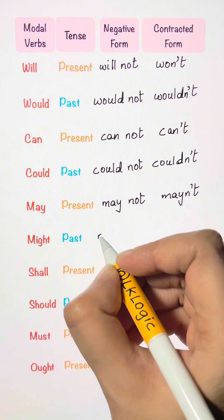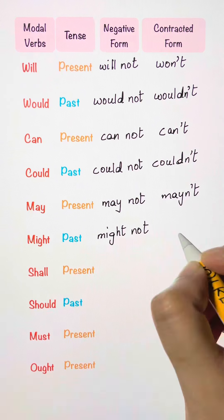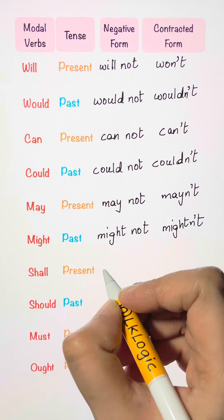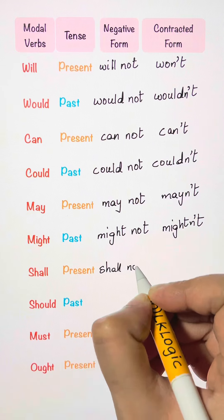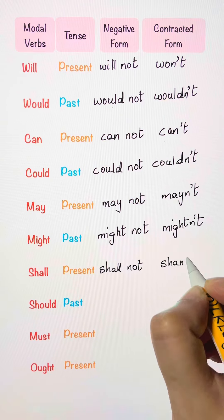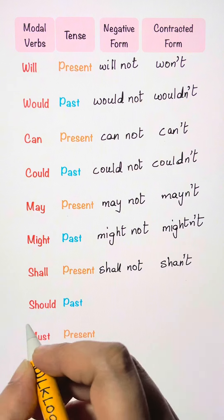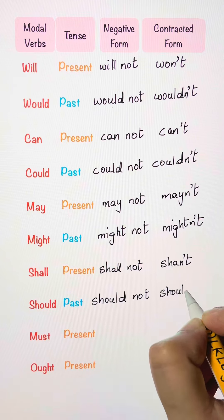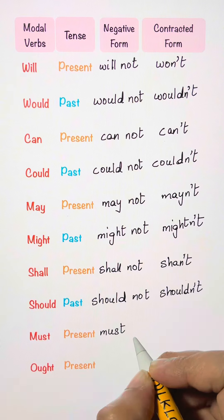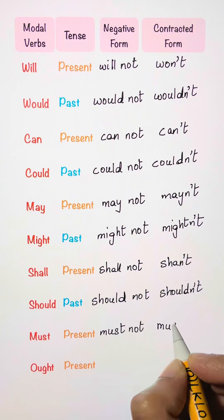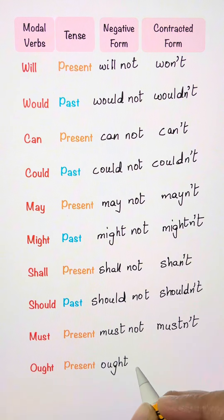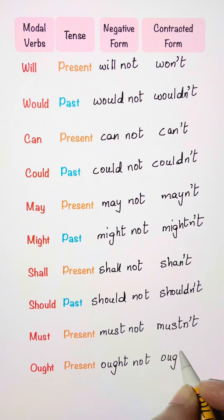Might, might not, mightn't. Shall, shall not, shan't. Should, should not, shouldn't. Must, must not, mustn't. Ought, ought not, oughtn't.